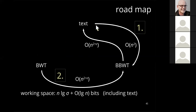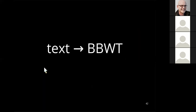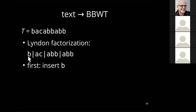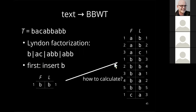Our roadmap: first I show an algorithm computing the BBWT from the text, then from the BWT. Starting with text-to-BBWT, we use the previous algorithm from Bonomo and others. The idea is to use the Lyndon factorization again: we factorize the text and process each factor individually — for the first factor 'b' we simply insert b, and then the question is how to obtain the final BBWT shape.